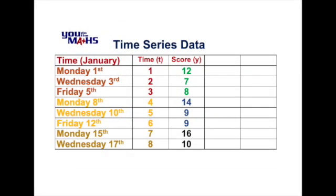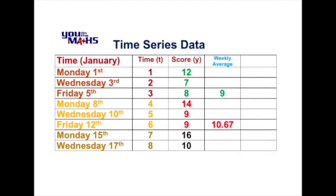Let's look at the table of data and split it into each week. For the first week, the average of the scores — 12, 7 and 8 — was 9. In the second week, the average of 14, 9 and 9 was 10.67, so we can see a rising number of parcels from week one to week two. Unfortunately the third week is incomplete so we can't work out an average for it. What we can then do is calculate what percentage each day is of that weekly average.